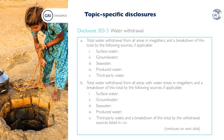Disclosure 303-3 requires organizations to disclose quantitative information about their water withdrawal, with a new distinction for reporting information regarding areas with water stress. Organizations are required to report their total water withdrawal for all areas and separately for areas with water stress, broken down by surface water, groundwater, seawater, produced water and third-party water — where third-party water is water supplied by municipal water networks or other organizations. If organizations source third-party water from areas with water stress, they are required to report the original sources of this water.